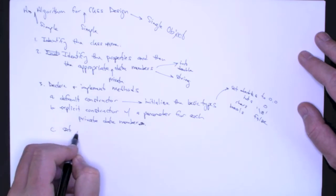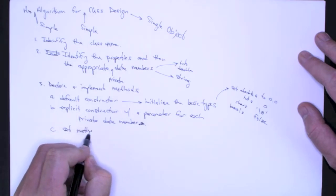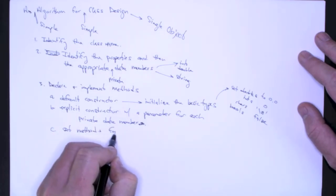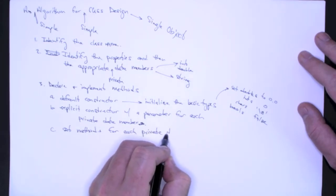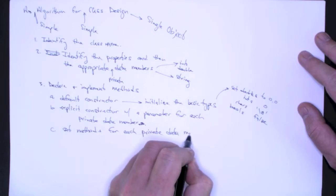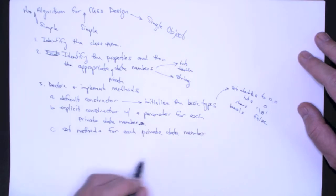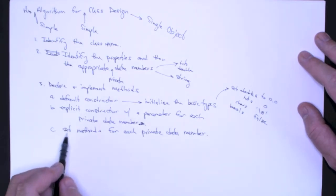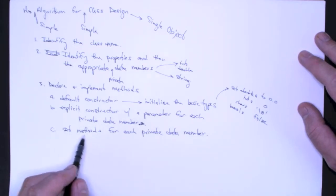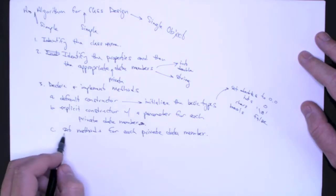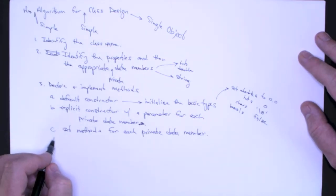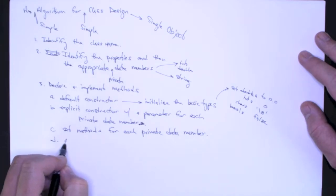You're going to need set methods for each private data member. So I want to be able to change each private data member and change only that private data member. Maybe you give me other set methods that will let me change private data members in some combination, but as a bare minimum, I want to see set methods for each private data member.